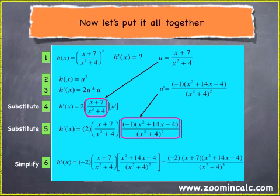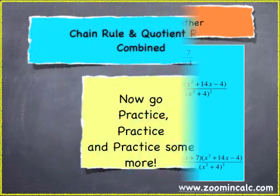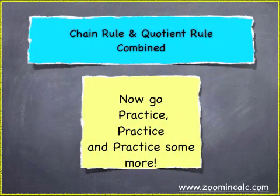And then in item six, we simplify. And the only thing we've done differently here is, we combined the negative one in the numerator with the two, and everything, and then in the denominator, we were able to combine x squared plus 4 with x squared plus 4 squared, and that gives you x squared plus 4 cubed. And we are done. And that's chain rule and quotient rule combined.